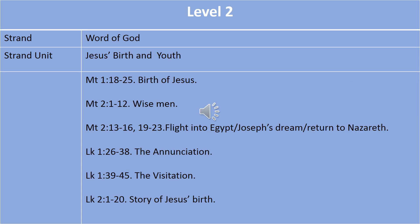Once again at Level 2, treatment of Christmas is not just contained within the Liturgy and Prayer strand. Within the Word of God strand, in the strand unit of Jesus's birth and youth, the children come to learn more about the Christmas story. They hear about the birth of Jesus from Matthew's gospel, including the flight into Egypt, Joseph's dream, and the Holy Family's return to Nazareth. They also encounter in Luke's gospel the story of the Annunciation, the Visitation, and then Jesus's own birth.